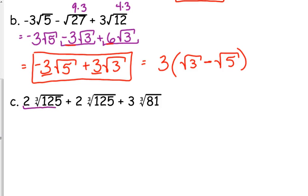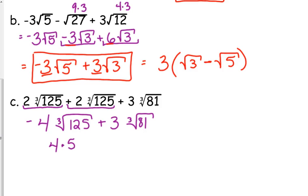You could say, well, I have 2 of them plus 2 of them. So, that's 4 times the cube root of 125 plus 3 cube roots of 81. And then say, well, the cube root of 125 is 5. And 81 is 27 times 3, right? Yep. Cube root of 27 is 3, so 3 times 3 is 9. The 3 stays under. So, the final answer is 20 plus 9 cube roots of 3.